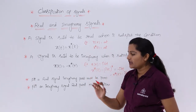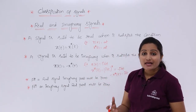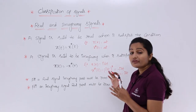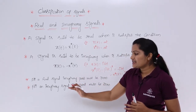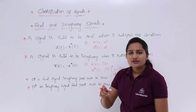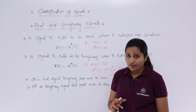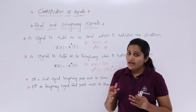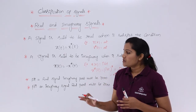So x(t) = -x*(t) is satisfied, which means x(t) = ibt is an imaginary signal. Two important points: for a real signal, the imaginary part must be 0; for an imaginary signal, the real part must be 0.